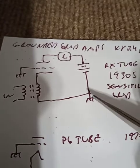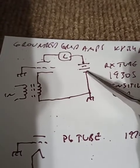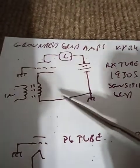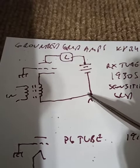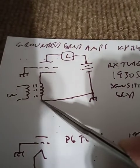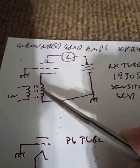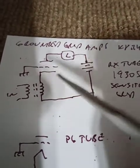Grounded-grid, negative of the B battery, ground. Ground here, here, connects this leg of the transformer to the grid. Therefore, the drive is grid-to-cathode.